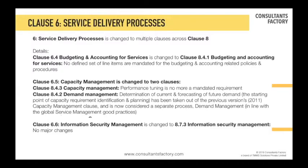Moving on, clause 6.4 budgeting and accounting: no great change, remains the same. The only thing is earlier they used to define a solid set of mandatory line items in the budgeting or accounting sheet — that has been removed. The line item details are now to be chosen by you. Then clause 6.5, capacity management, has been broken into two parts: capacity and demand.